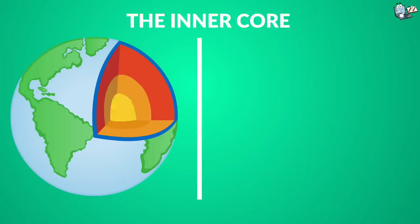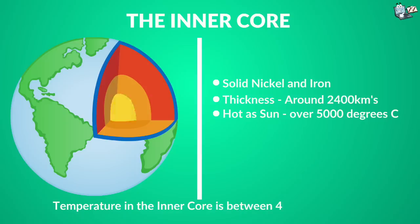Inner core. This layer is also built up of nickel and iron, but in solid form. The inner core is almost as hot as the surface of the Sun. Over 5,000 degrees Celsius.